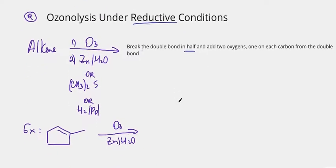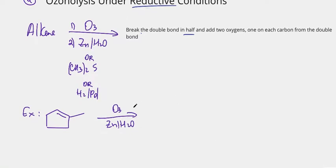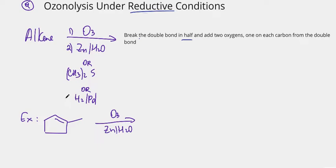So let's go ahead and take a look at this example and try to figure out what the products would be. I forgot to say ozonolysis reactions happen on an alkene. So you must have a C double bond C for this reaction to occur.